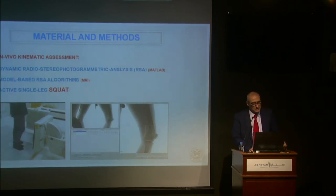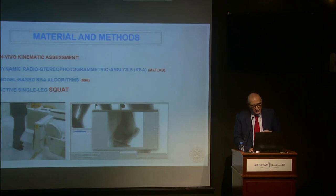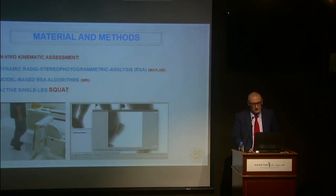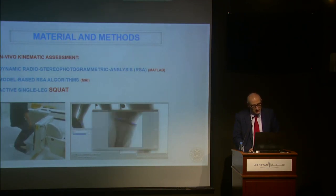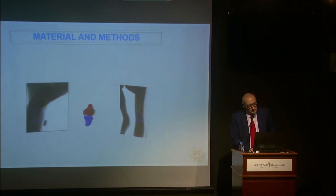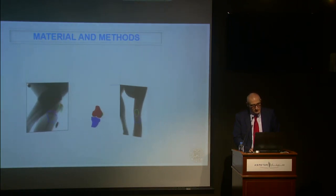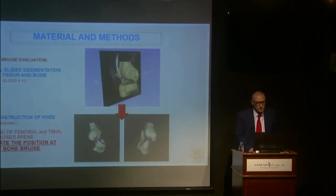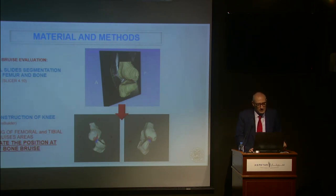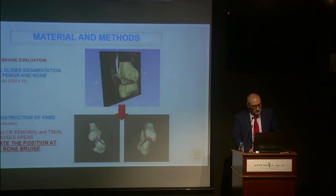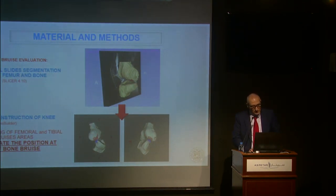We performed in vivo kinematic assessment of these cases to obtain the real kinematics of each patient using a model-based algorithm. We also asked them to perform a squat to evaluate this scenario during testing. Then we performed bone segmentation to create a bony model of the joint and superimposed the MRI bone bruise — taking the sagittal slice segmentation of the tibia and femur to identify where the bone bruise was located — and then did a 3D reconstruction of the knee joint matching the femoral and tibial bone bruise area to create the position at the time of the bone bruise.